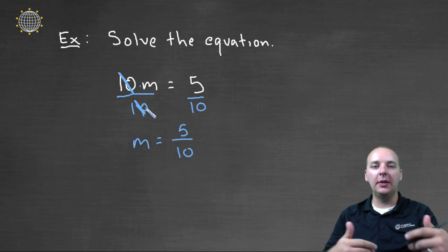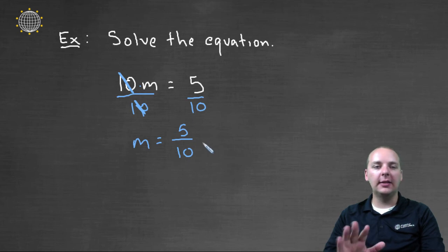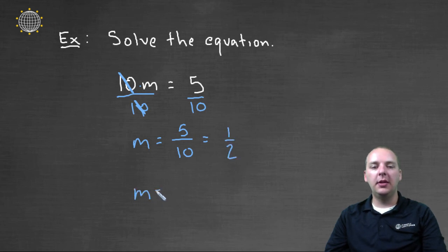You would just get an m equal to five over ten. And make sure we're dividing both sides by ten. So five over ten, that's a fraction, which is okay, that's totally fine. And matter of fact, that fraction will reduce to one half. So our solution would be m equals a half.